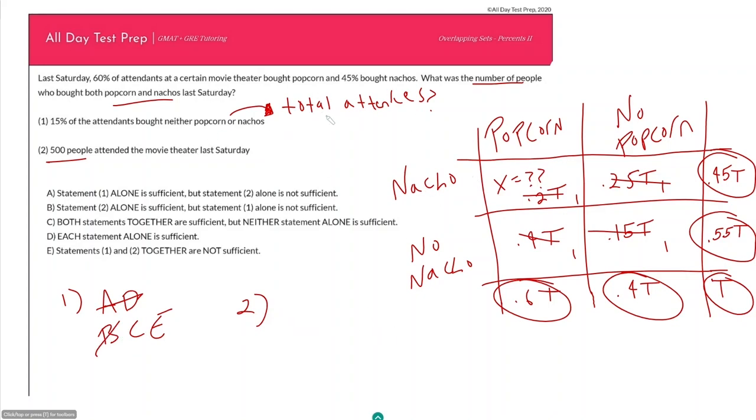And so now we got to look at them together. And so remember our first statement allowed us to just rephrase our question, because we're looking for 0.2T, so we're just looking for the total number of attendees, and then the second statement they gave that to us. And so based on that, without even having calculated, you should know that together they are sufficient.